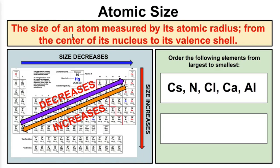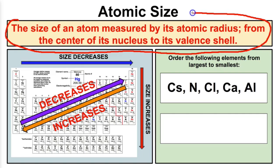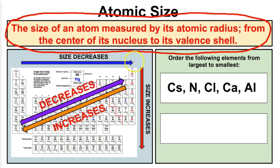Alright so let's first start off talking about atomic size. The size of an atom is measured by its atomic radius — from the center of its nucleus all the way to its valence shell, or its outermost shell. The thing about atomic size is this: if we take a look at a periodic table of elements, the size of atoms decreases as you move from left to right, and the size of atoms increases as you move from top to bottom.